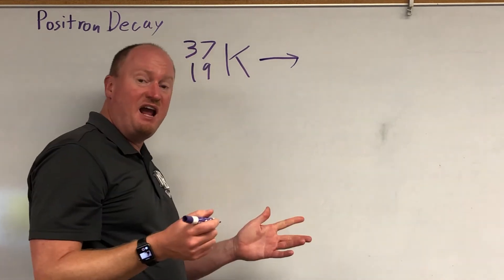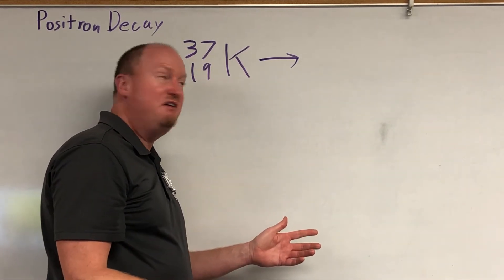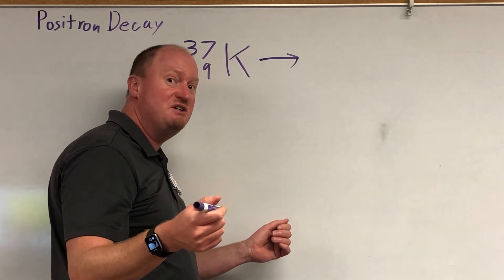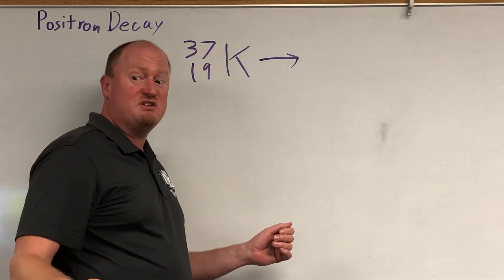But antimatter being the evil twin of regular matter, this evil twin electron has a lot of the same properties. A lot of the same properties are exactly the same, and a lot of them are exactly the opposite.